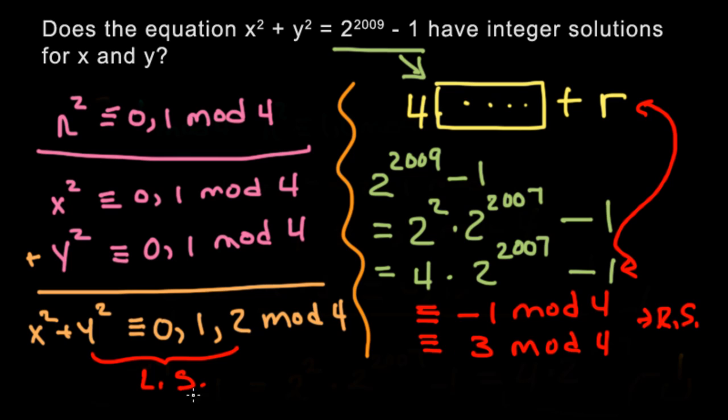So if we compare the left and right side, we are saying that the left side can be 0, 1, or 2 mod 4. But if you look, the right side is always 3 mod 4. So this is a contradiction. So this equation right here cannot have any integer solutions.